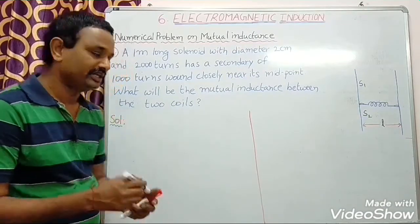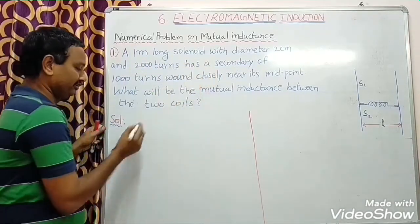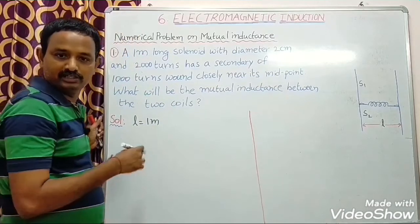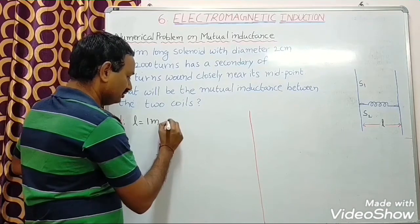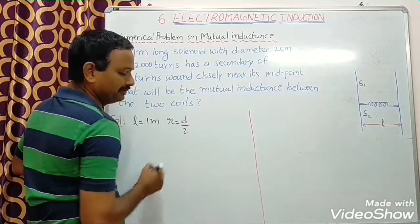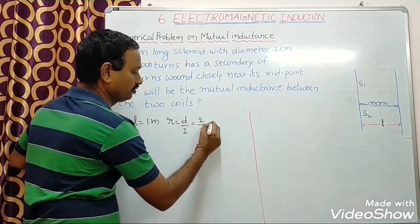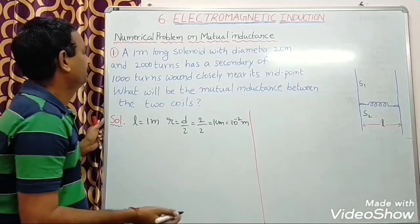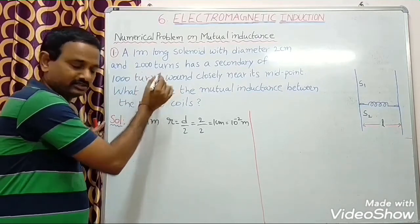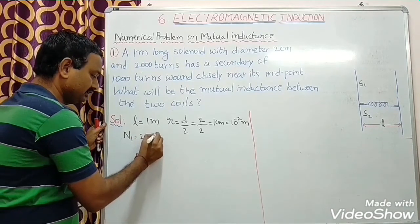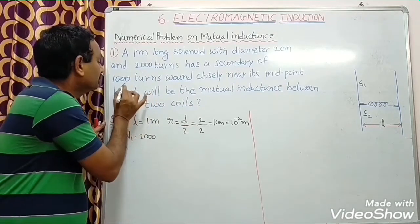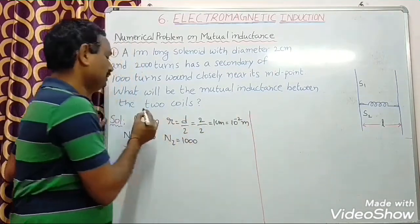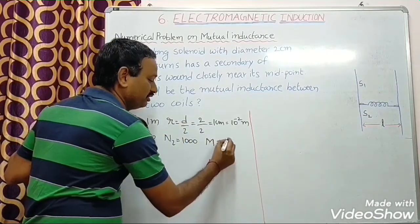Now I will write the given data. Given: a 1 meter long solenoid, that means L equal to 1 meter. With diameter 2 cm, from that I can find radius R equal to D by 2, that is 2 by 2, so you get 1 cm, which means 10 power minus 2 meter. Next, N1 they have given 2000 turns, so N1 equal to 2000, and N2 they have given 1000 turns, so N2 equal to 1000. We need to find mutual inductance between the two coils, that is M equal to question mark.